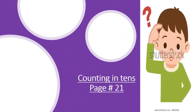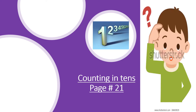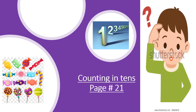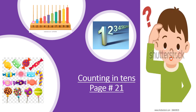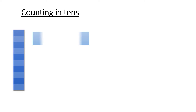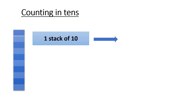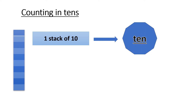Do you remember we have learned counting in tens on page 21 earlier? Let's revise them first. 1 to 9 are ones, and when we add one more number — beads or candies — we get one stack of 10, one bar of 10, which in numbers is called T-E-N, 10.